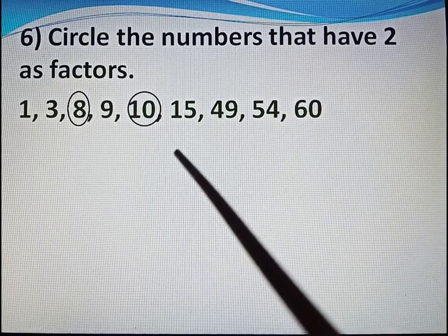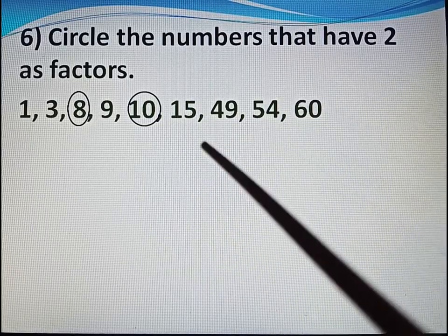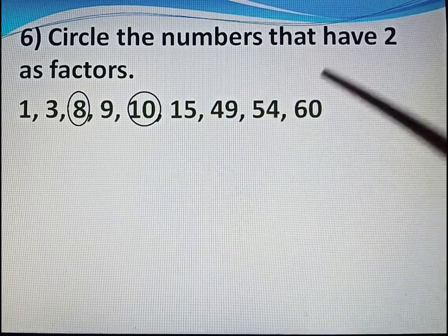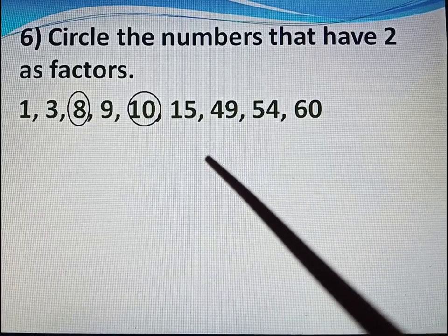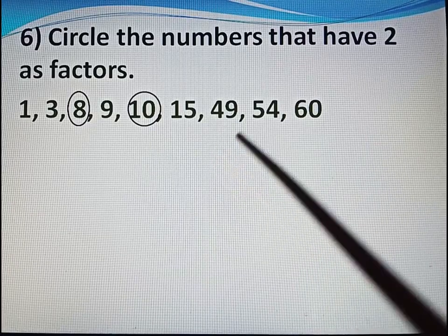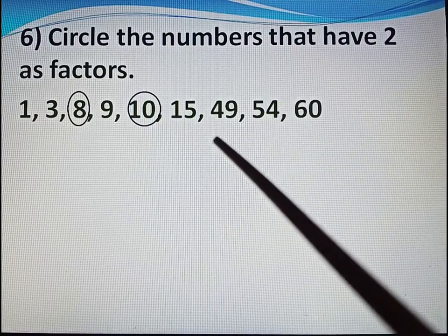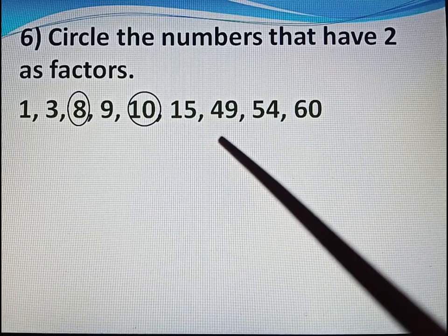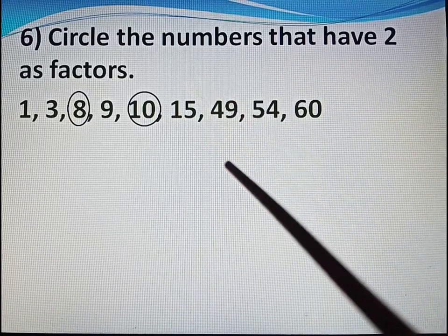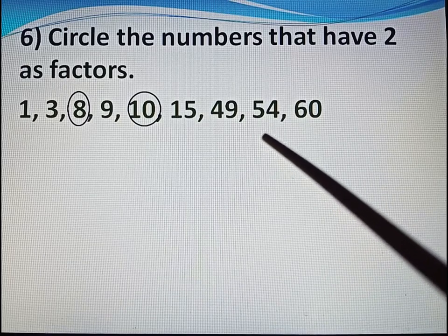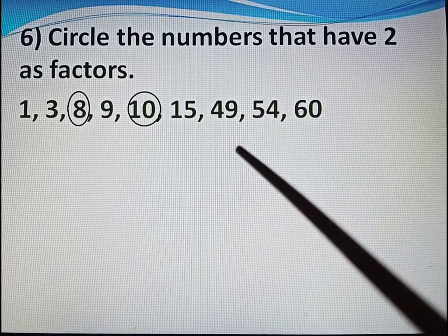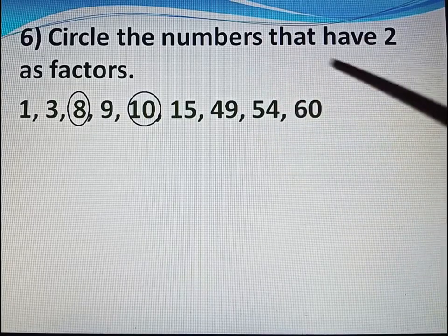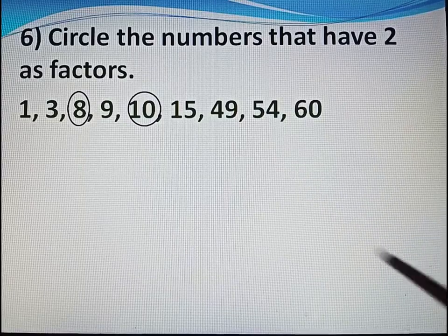Next number 15: if we divide 15 by 2, it is not divisible, so 15 does not have 2 as a factor. Next number 49: if we divide 49 by 2, it is not divisible, so 49 does not have 2 as a factor. Next number 54: if we divide 54 by 2, it is divisible — so 54 has 2 as a factor. Circle 54.